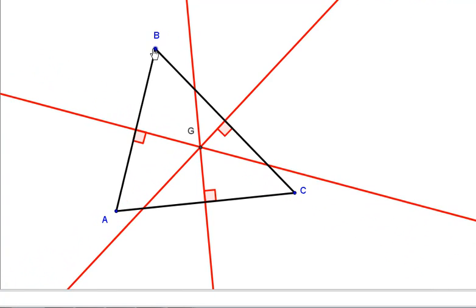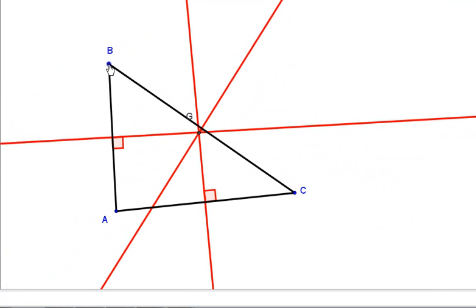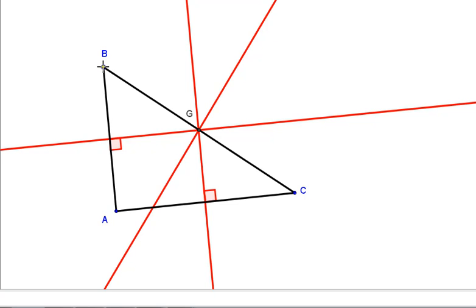But watch what happens when I make a right triangle. The circumcenter is now on the midpoint of the hypotenuse.